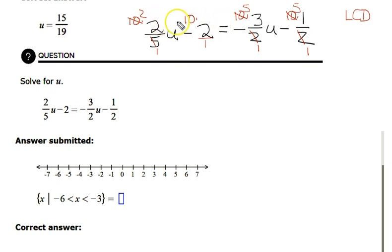We need to just continue simplifying the top. 2 times 2u is 4u. Negative 10 times 2 is negative 20. Negative 5 times 3 is negative 15u. And negative 1 times 5 is negative 5. As you do this, you should go back and check your work, watch the signs, take your time.